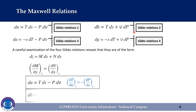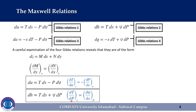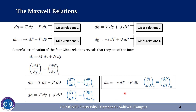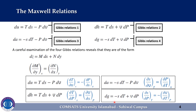The first Maxwell relation from the Gibbs function can be written as: partial T over partial v while s is held constant is equal to minus partial p over partial s while v is held constant. From the second equation we get: partial T over partial p while s is held constant is equal to partial v over partial s while p is held constant. The third expression is: partial s over partial v while t is held constant is equal to partial p over partial T while v is held constant. And the fourth equation is: partial s over partial p while t is held constant is equal to minus partial v over partial T while p is held constant. These expressions are called the Maxwell relations.